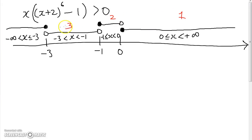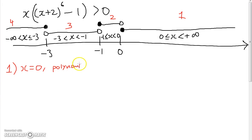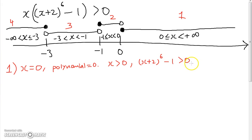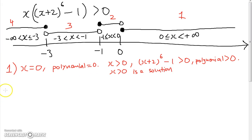To solve the inequality we check every piece. In piece 1, when x = 0 the polynomial is 0, since x is a root. When x > 0, we know (x + 2)^6 minus 1 is certainly also larger than 0, so the polynomial is always positive. In other words, x > 0 is a solution.